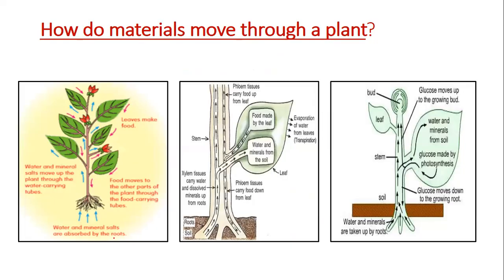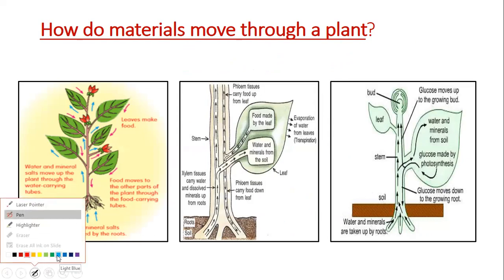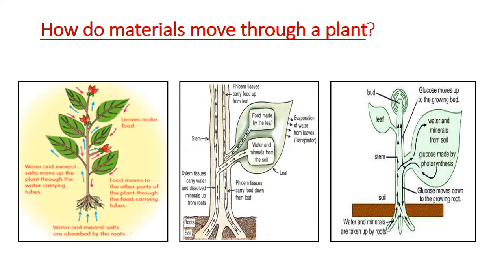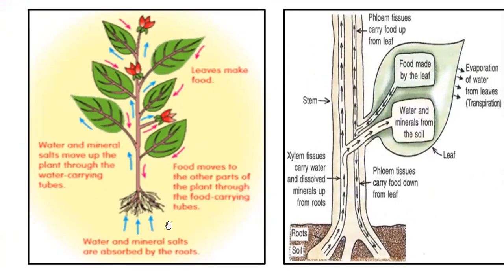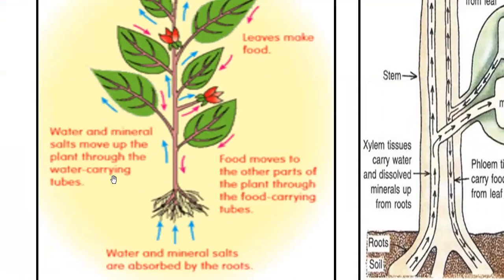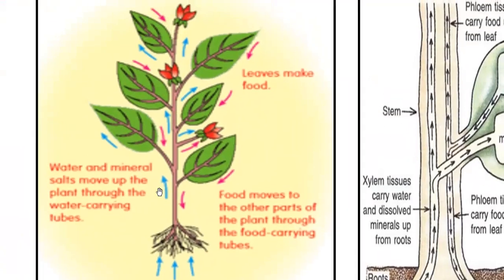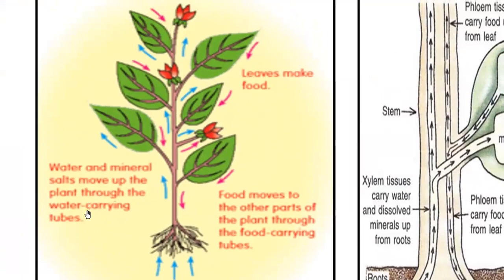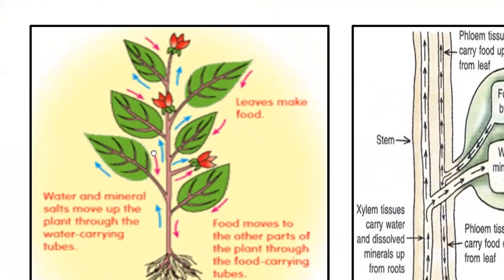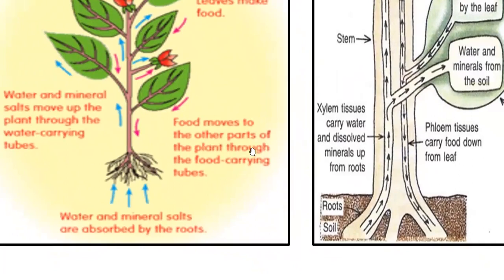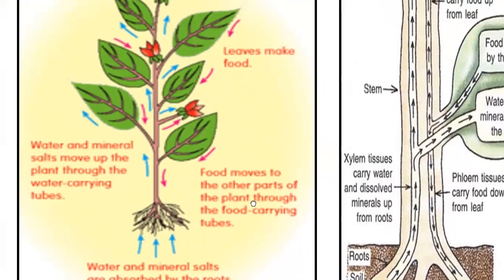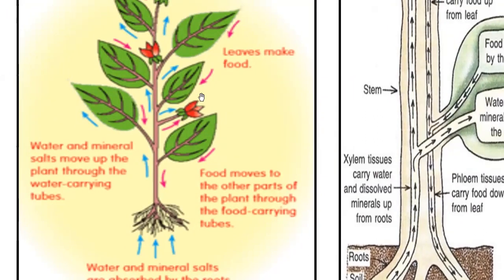As you can see here, these different pictures show how the plant gets water and the mineral salts, which are absorbed by the roots from the soil. Look at the blue arrows — this is the water moving up. Water and mineral salts move up the plant through the water-carrying tubes, which are called xylem. Then the food moves to other parts of the plant through the food-carrying tubes, which are called phloem, represented by the purple arrows up and down in all directions.